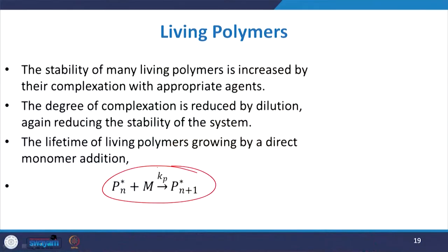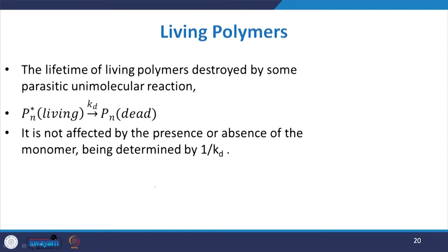The stability of many living polymers is usually increased by their complexation with appropriate agents. The degree of complexation is reduced by dilution, again reducing the stability of the system. The lifetime of a living polymer growing by direct monomer addition is given by: P*n + M → P*n+1, with rate constant Kp.